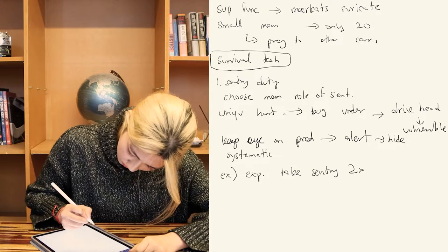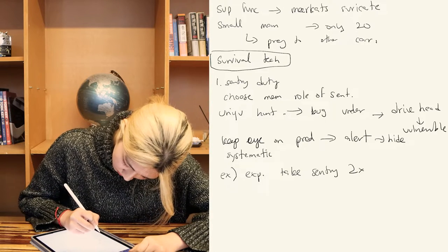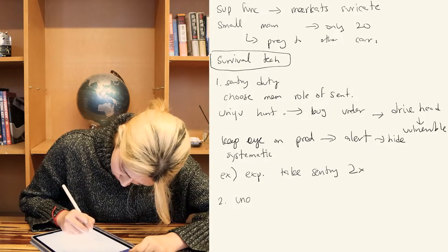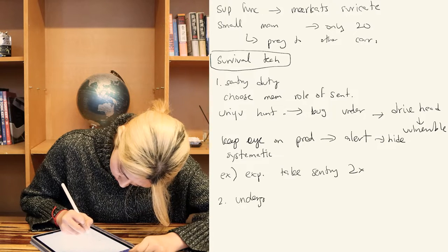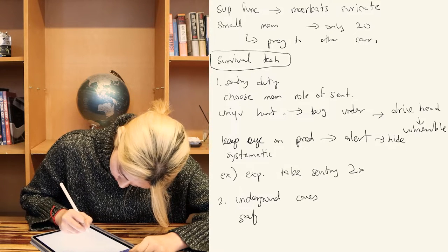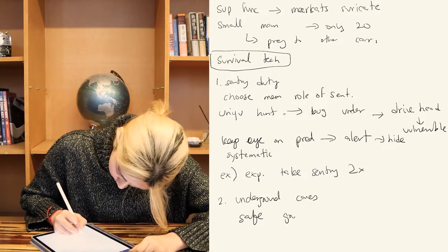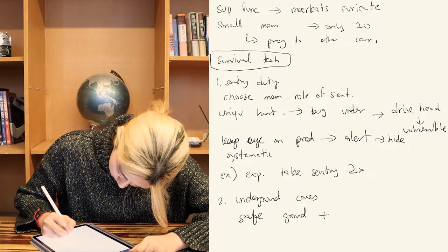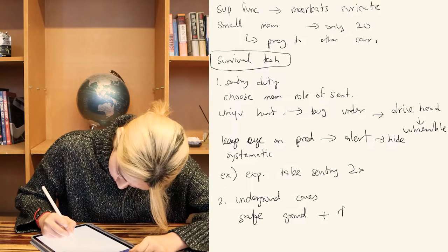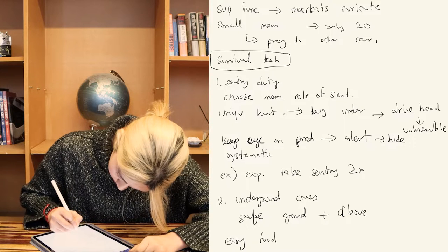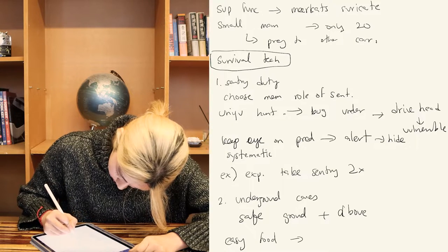Moreover, meerkats live in underground caves. As they live underground, they are safe from ground-dwelling beasts and threats approaching from above. Meanwhile, they are able to easily acquire food by hunting animals that live underground, such as bugs and worms.